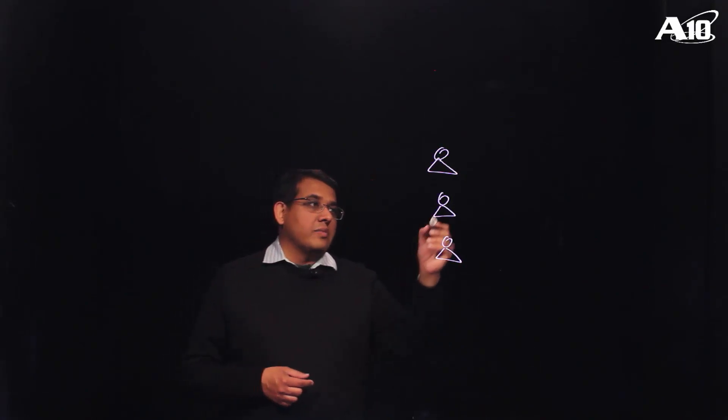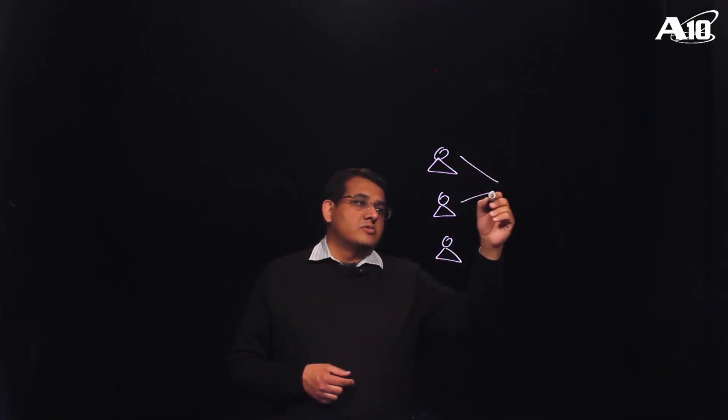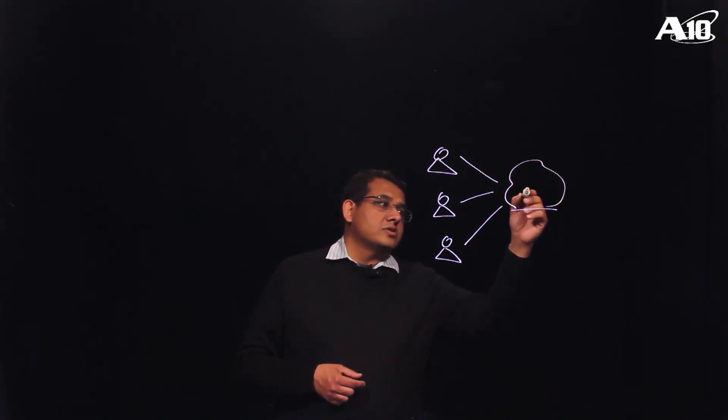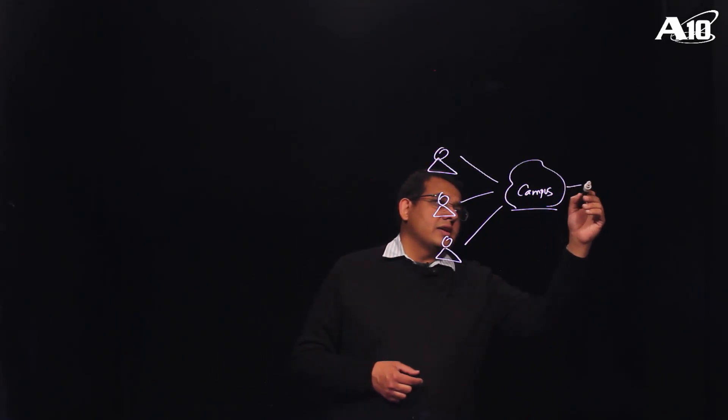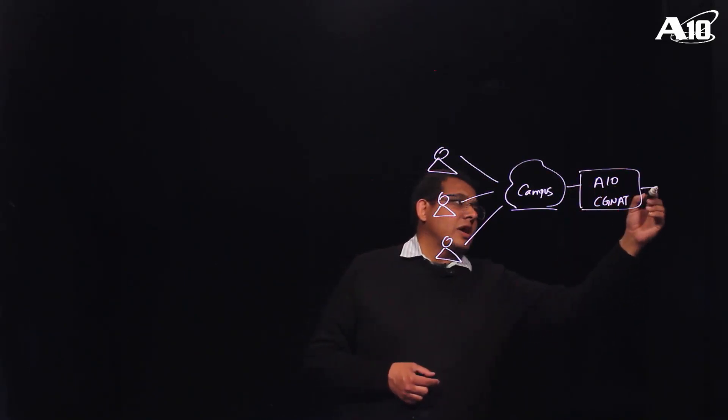So let us look at why do you need Carrier Grade NAT in a university scenario. Typically universities have large student bodies and the IT department would be offering them internet access both on the campus as well as off campus. So you have the students and the faculty accessing the network of the campus over the WiFi and over the wired network. Then they would be going through the A10 CGN NAT device for NAT translation and then they would access the internet.